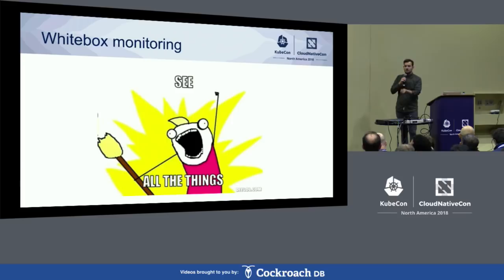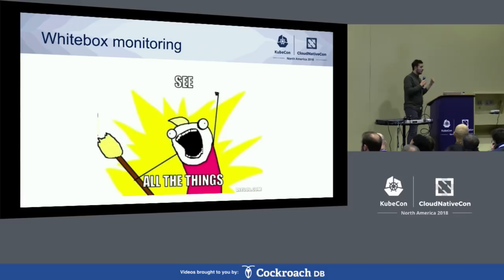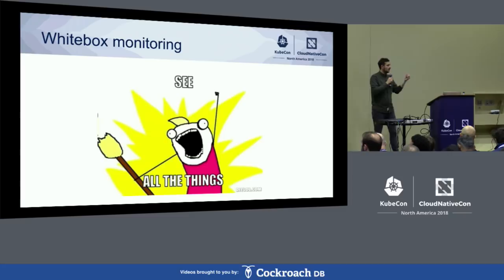This is really important when you think about Prometheus. We always want to make sure we get data as close to the origin of some action. If we are talking about a network service, we always want to have the instrumentation as close as possible to the code that actually does the network requests.